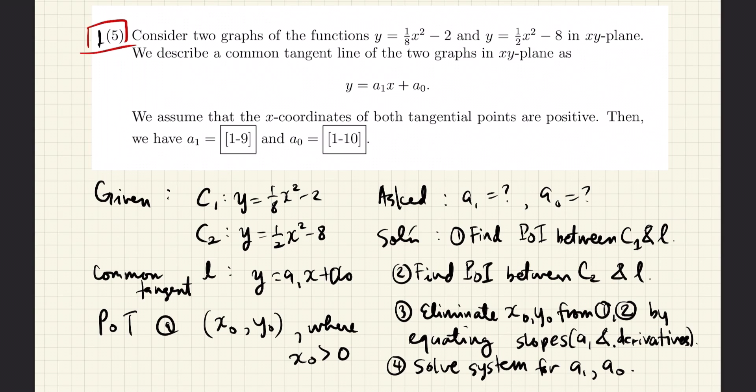Our approach to this problem is as follows: First, we find the point of intersection between C1 and L. Then, we find the point of intersection between C2 and L. Then, we will eliminate x0 and y0 from the equations we obtained from steps 1 and 2.